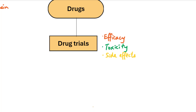Third, side effects — different from toxicity. Toxicity involves killing many healthy cells; side effects are less severe. The drug is safe to use but may have unwanted secondary effects that aren't serious enough to stop using it. Fourth, dosage — the concentration or volume of drug to use, because too low a dosage won't work, and too high a dosage might cause health problems.